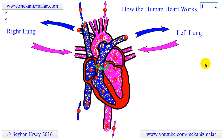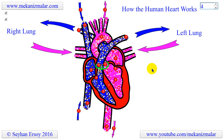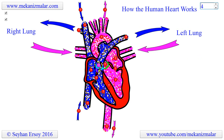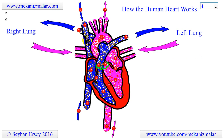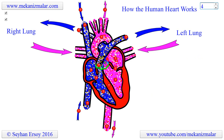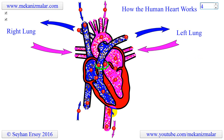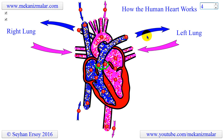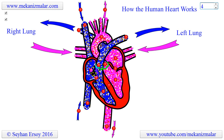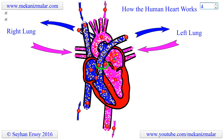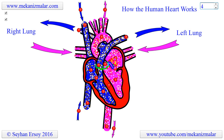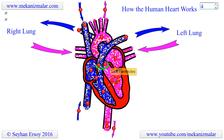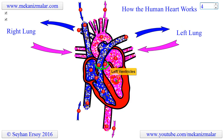The heart has 4 chambers and 4 valves that are connected to various blood vessels. Veins are blood vessels that carry blood from the body to the heart. Arteries are blood vessels that carry blood away from the heart to the body. The atria are the 2 upper chambers that collect blood as it flows into the heart. The ventricles are the 2 lower chambers that pump blood out of the heart to the lungs or other parts of the body.